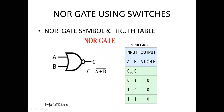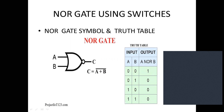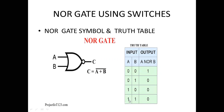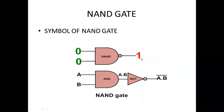NOR gate truth table: inputs A and B, same four conditions — 0,0; 0,1; 1,0; 1,1. We do addition then complement. 0+0=0, complement is 1. 0+1=1, complement is 0. 1+0=1, complement is 0. 1+1=1, complement is 0. That is the NOR gate.